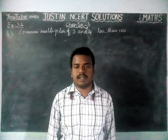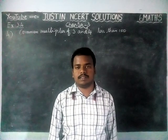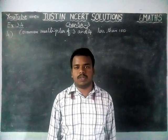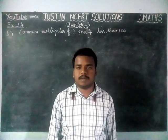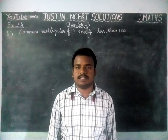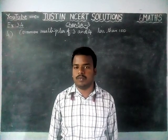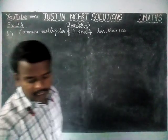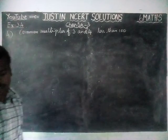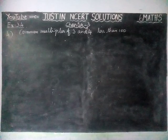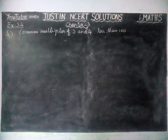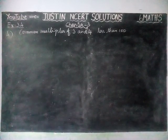Hi students, welcome to Justinian's MCRT Solutions. In this video, we are going to see Class 6 Maths Chapter 3 Exercise 3.4, Fourth Question. And here the question is: write all the numbers less than 100 which are common multiples of 3 and 4.